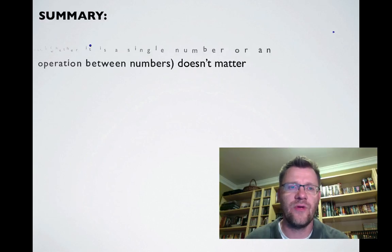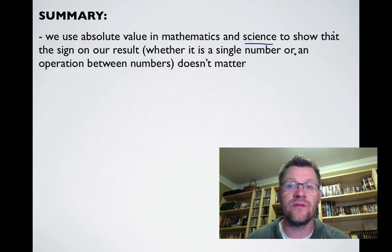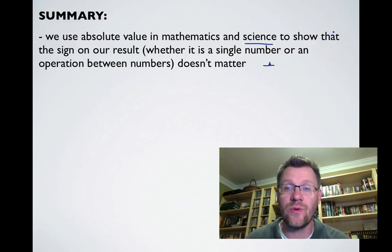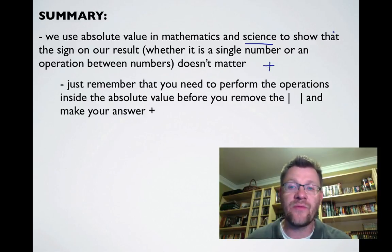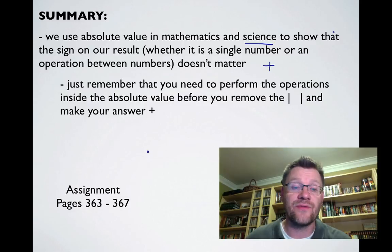In summary, we use absolute value in mathematics and science to show that the sign on our result — whether it's a single number or an operation between numbers — doesn't matter; it's always going to be positive. Just remember to perform the operations inside the absolute value before removing the signs and making your answer positive. Your assignment is on pages 363 to 367. Good luck and we'll see you in class.